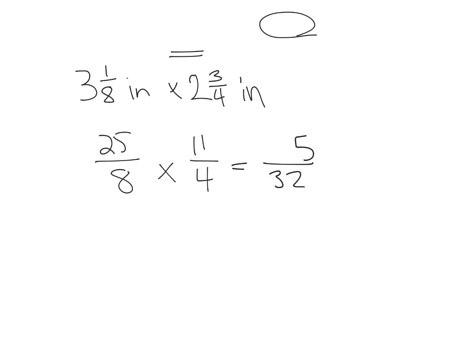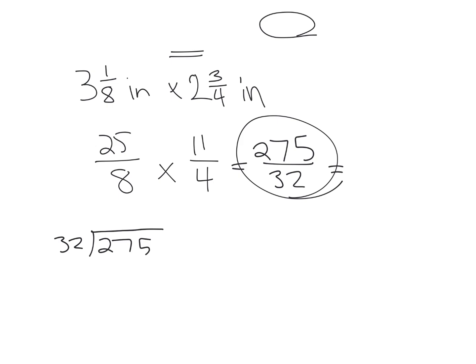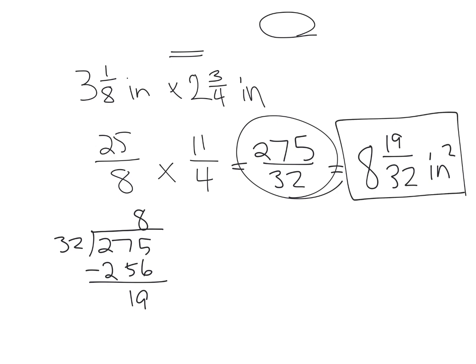Taking each mixed number and turning it into improper fractions, our denominator is 32. Then 25 times 11 is 275, giving us 275 over 32 for one tile's area. Dividing 275 by 32: eight times 32 is 256, subtracting gives 19 remaining — so one tile is eight and 19/32 square inches.